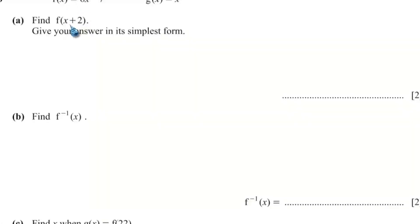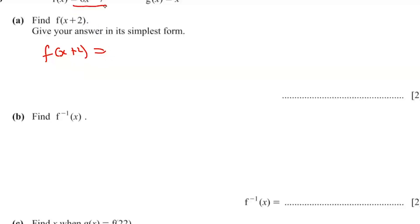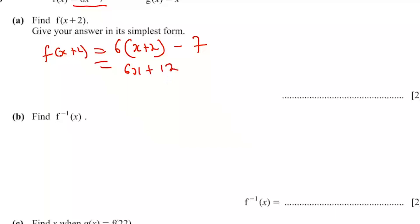So f(x plus 2) equals 6 times (x plus 2) minus 7. That gives 6x plus 12 minus 7, which equals 6x plus 5. So f(x plus 2) equals 6x plus 5.